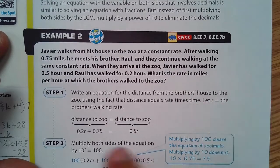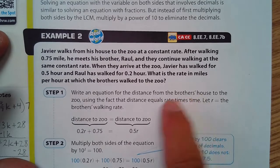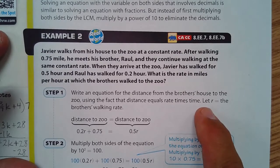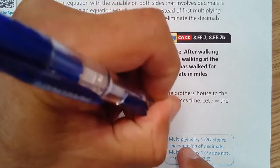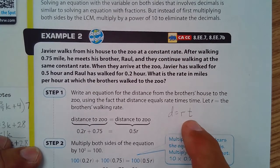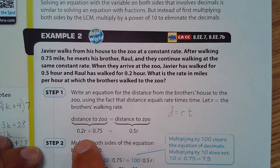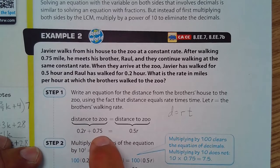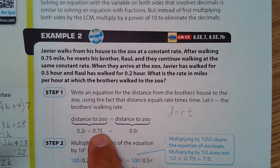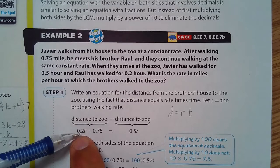What is the rate in miles per hour at which the brothers walk to the zoo? Let's write an equation for the distance the brothers walked from the brothers' house to the zoo, using the fact that distance equals rate times time. R is the brothers' walking rate. So the distance to the zoo is, we have walked 0.75 of a mile, and they've walked for 0.2 hours at that certain rate.